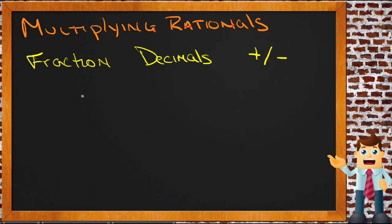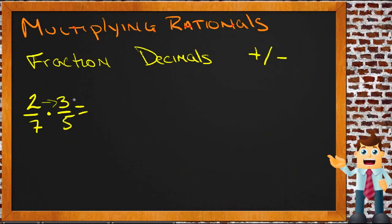Multiplying fractions is actually easier than it looks because you don't have to worry about common denominators the way you do with adding or subtracting fractions. To multiply fractions — say 2/7 times 3/5 — you multiply straight across: 2 times 3 is 6, and 7 times 5 is 35, so your new fraction is 6/35, just the product of the numerators over the product of the denominators.